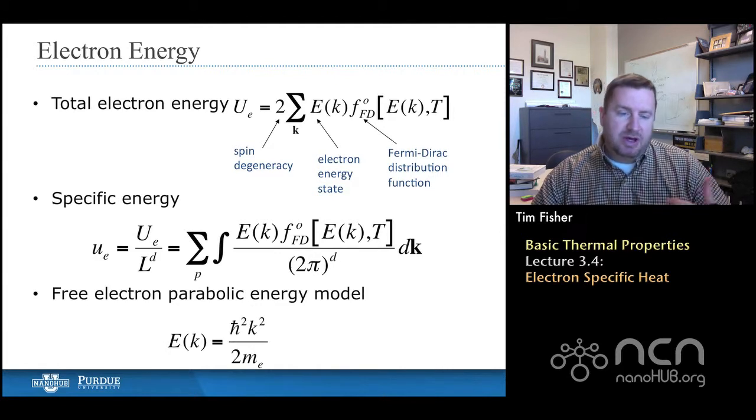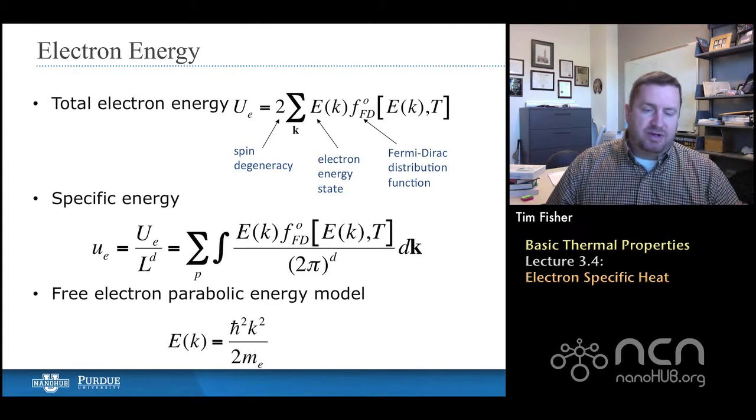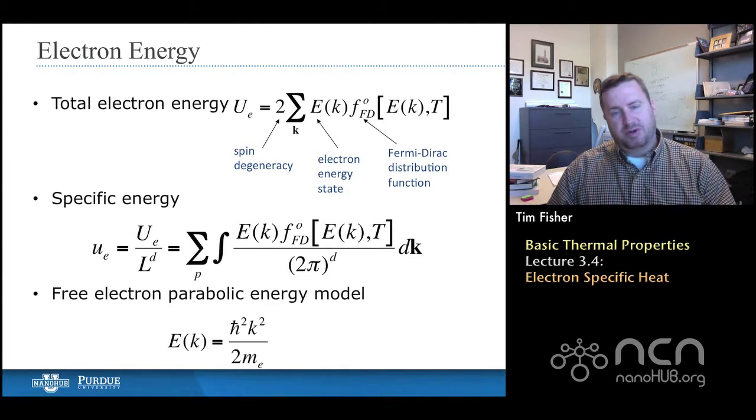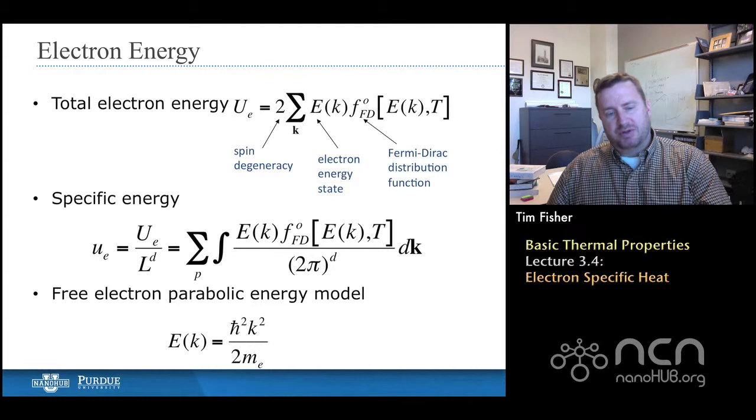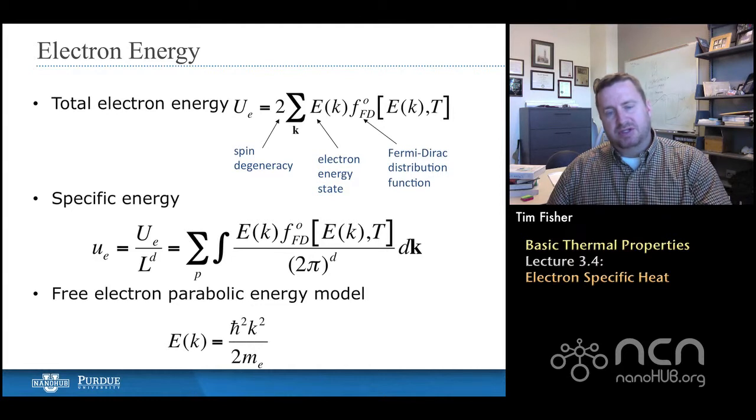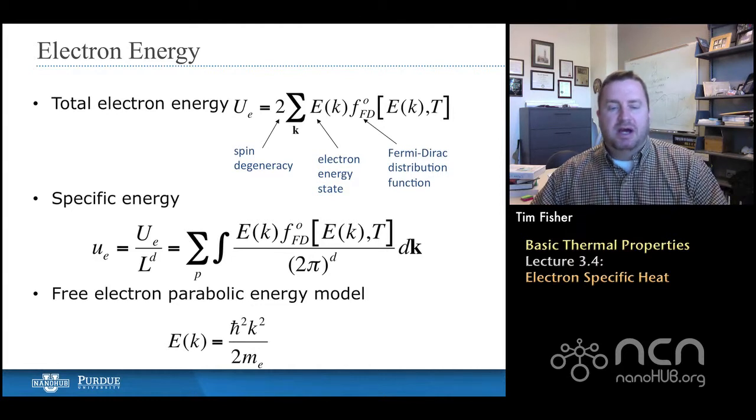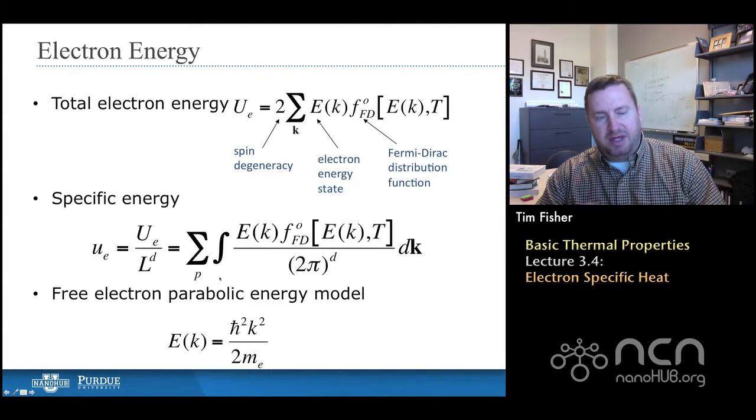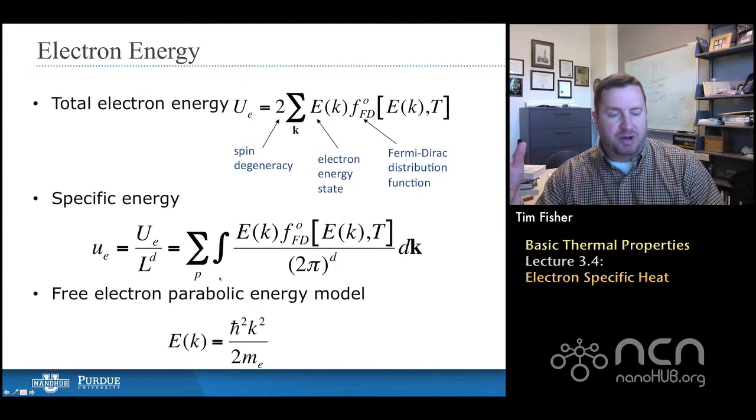So when we put all this together, then we go back to our previous analysis where we said most of the time we want to convert those summations to integral form. Then we get the second equation here, and there's a summation over P. When we were dealing with phonons, that summation was over different branches of the phonons.